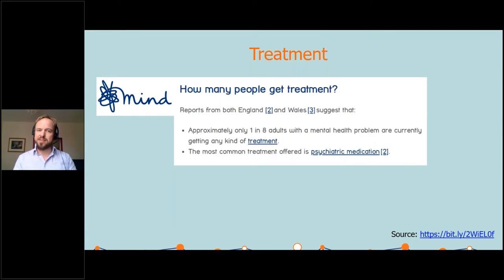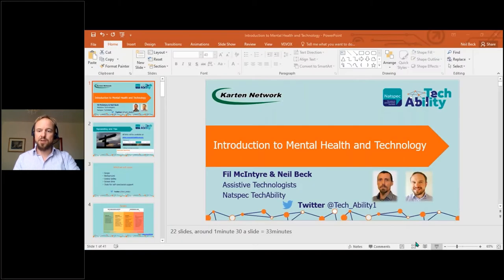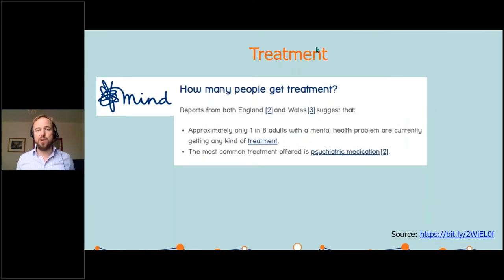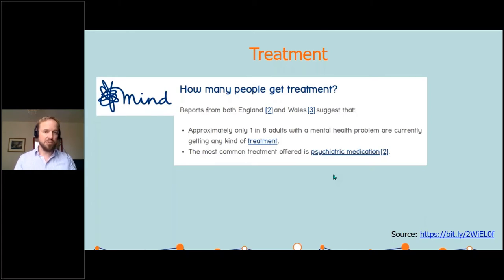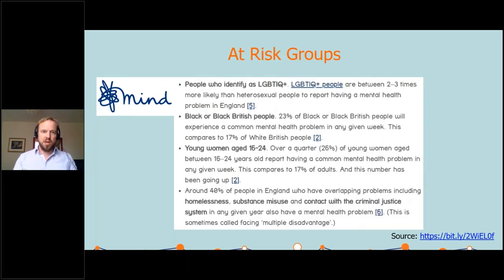Now, this I found quite shocking: approximately only one in eight adults with a mental health problem are currently getting any kind of treatment. The most common treatment offered is psychiatric medication. I think that makes it even more important that we do as much as we can to get people the help and support that they need. There are also particular at-risk groups — given all the kind of BLM movement at the moment, which is so important.